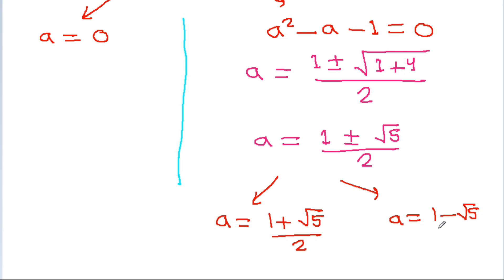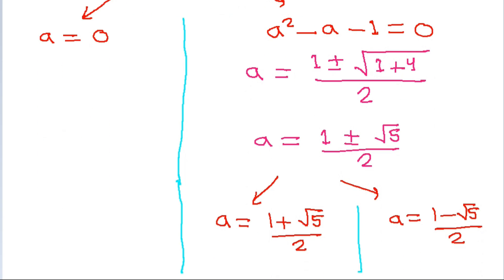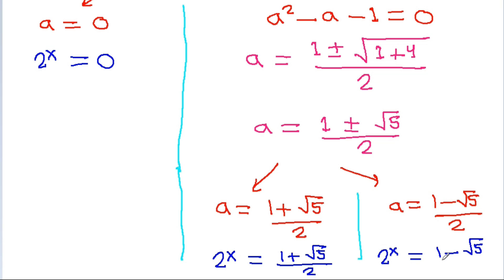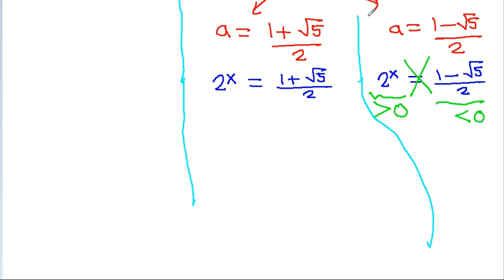This gives us two roots: a equals (1 plus root 5) divided by 2, or a equals (1 minus root 5) divided by 2. Now, since a equals 2 to the power x, it must be greater than 0. The case a equals 0 is not possible. Also, (1 minus root 5) divided by 2 is less than 0, so that is also not possible. Therefore the valid solution is a equals (1 plus root 5) divided by 2.